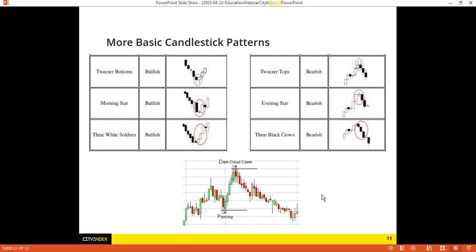The piercing candle and the dark cloud cover — these are just opposites. The piercing candle: you see this big red candle, then you see price gap down, and then give a relatively large bullish candle that moves into the prior red candle — that's a potential turn to the upside. Dark cloud cover: same thing in the opposite fashion — you see a bunch of green candles, then a red candle that gaps up, opens higher than the close of the prior candlestick, then moves down and closes well into the prior candle. That's called dark cloud cover — a possible reversal to the downside.